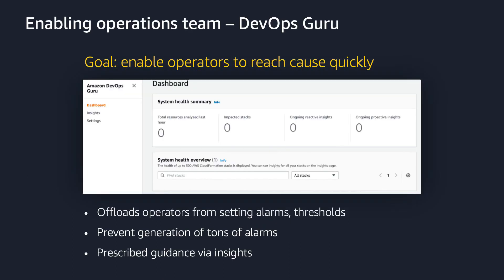Enabling DevOps Guru is as simple as clicking a button and providing guidance about your application boundaries. To understand the application's behavior, DevOps Guru automatically starts to monitor the AWS resources by ingesting Amazon CloudWatch vended metrics and AWS CloudTrail events. On its dashboard, DevOps Guru doesn't display fancy graphs, charts, or metrics at random. This is by design, because we want to offload you from monitoring the system's health. DevOps Guru takes care of these aspects and only notifies you when an anomaly is detected.